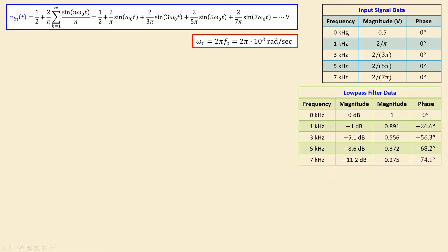From the table, at specific frequencies we have the magnitude and associated phases. At 0 kHz (DC), the magnitude is 0.5 and the phase is 0 degrees. At 1 kHz (fundamental), the magnitude is 2 over pi with phase 0 degrees. At 3 kHz (third harmonic), the magnitude is 2 over 3 pi with phase 0 degrees. The same pattern continues for the next two frequencies — amplitude and phase both determined from the Fourier series expression.